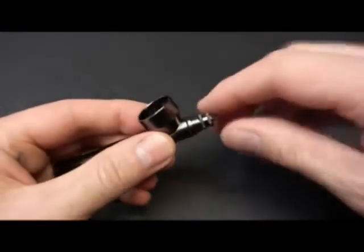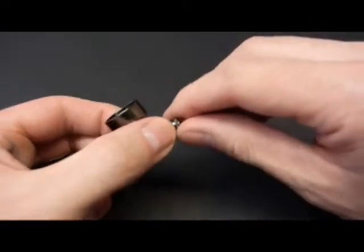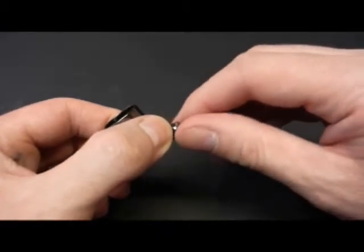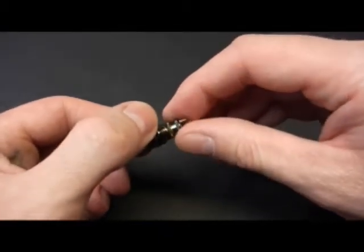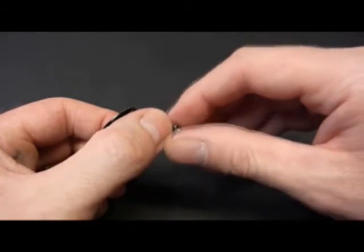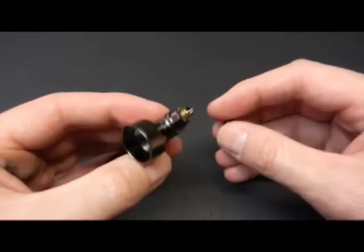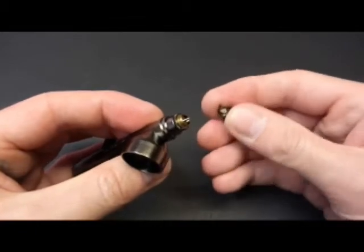Now we move around to the front of the airbrush. Take off the nozzle cap with the two horns. Now you can see the nozzle protruding there.